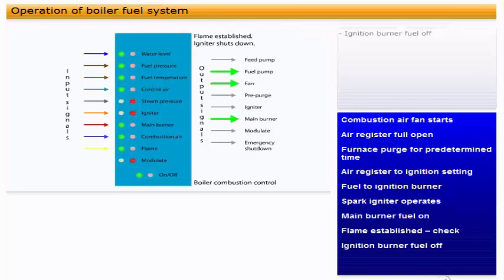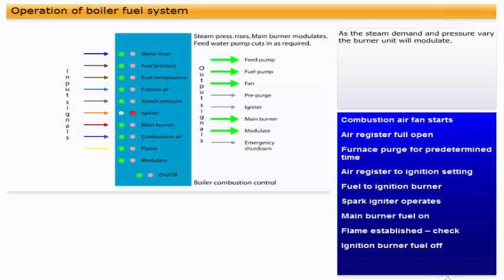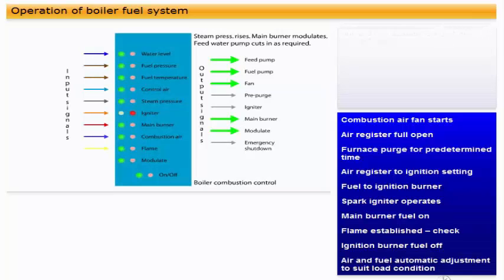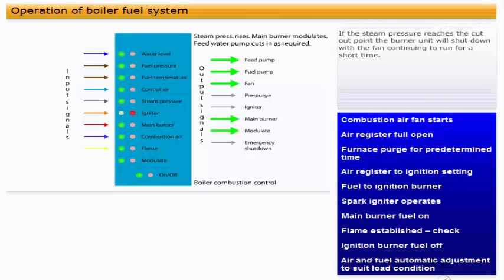As the steam demand and pressure vary, the burner unit will modulate. Air and fuel automatic adjustment to suit load condition. If the steam pressure reaches the cut-out point, the burner unit will shut down, with the fan continuing to run for a short time. You should always make sure you are familiar with the actual system fitted to the boiler on your vessel.